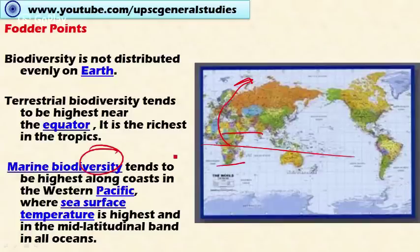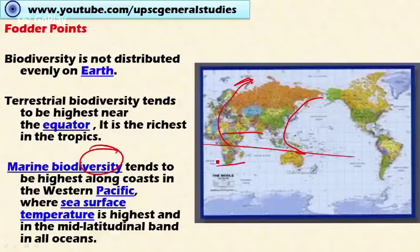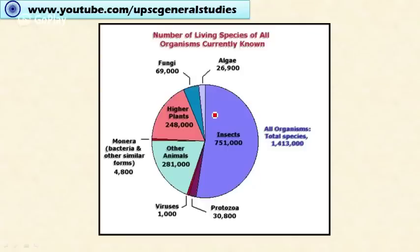Marine biodiversity tends to be highest along the coasts of the western Pacific, where sea surface temperature is highest. Higher sea surface temperature corresponds to higher biodiversity in the coastal areas of the western Pacific.